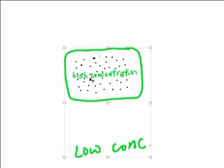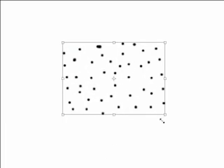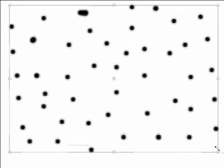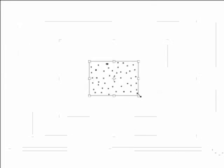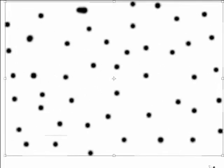However, these particles — this difference in concentration cannot be maintained. Something is going to happen. This high concentration of particles is going to start to spread. It's going to spread from an area of high concentration out to an area of low concentration until you have these particles all over the room. The particles are going to spread from the area of high concentration to an area of low concentration until they fill the entire room.